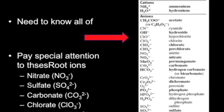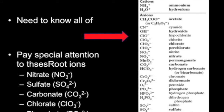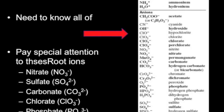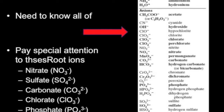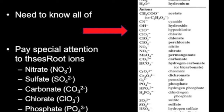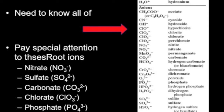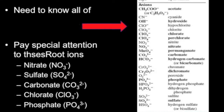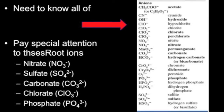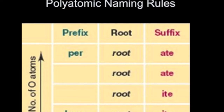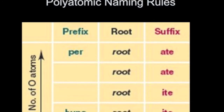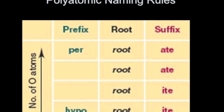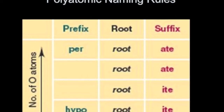We're going to spend time today talking about the naming conventions for these polyatomic ions, paying particular attention to the root ions — nitrate, phosphate, carbonate, and chlorate. All of these are what we call oxo polyatomic ions. They all have oxygen and some other element. There's a naming convention based on these root ions — the 'ates.' If we memorize these 'ates,' there's a certain number of oxygens, and we call them whatever the element is with the ending '-ate.'